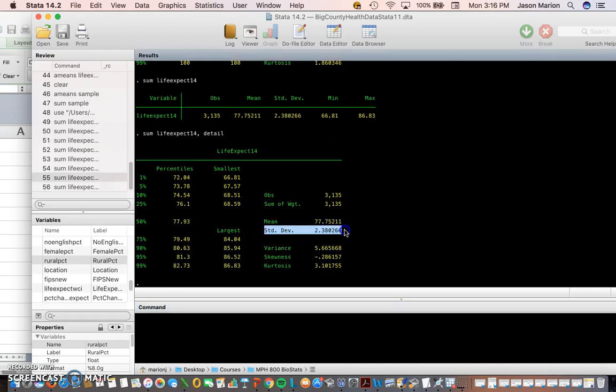If we type in the command detail, we get more information. It also gives us the standard deviation and the variance. The variance here is 5.665, which is the standard deviation squared. If you're interested in what variance is, it's the standard deviation squared. Or if you're interested in what standard deviation is, it's the variance to the 0.5 power, or the square root of variance.